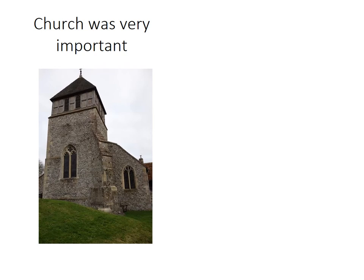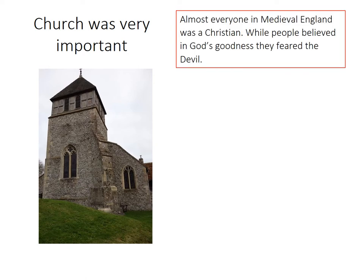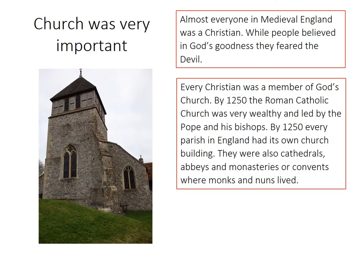Firstly, the Church was incredibly important to people in the Middle Ages. Almost everybody in medieval England was a Christian — people believed in God's goodness and they feared the devil. The Roman Catholic Church in particular was incredibly wealthy by 1250, led by the Pope and his bishops. Almost every parish in England had its own church, and there were also cathedrals, abbeys, monasteries, and convents. The church was everywhere.